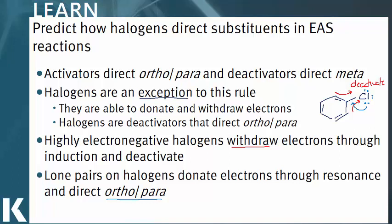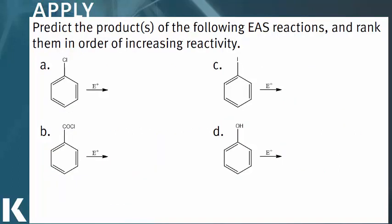So let's apply this with some practice questions. Here we need to predict the products of the following reactions and also rank them in order of increasing reactivity. Let's take a look at our reactions starting with A. Here we have chlorine, which is an electron withdrawing group. But remember, the halogens do act as ortho-para directors, so we would get an addition of our electrophile to both of the ortho and para positions.